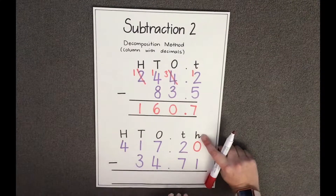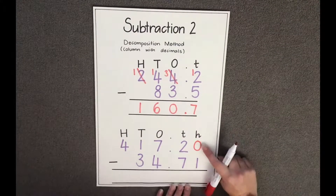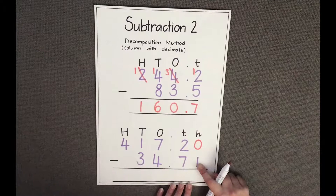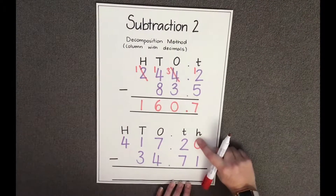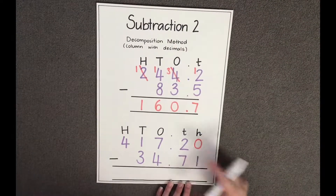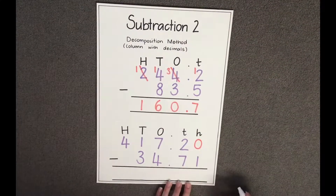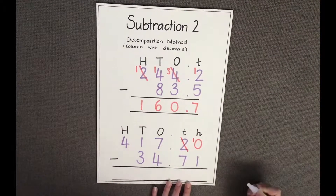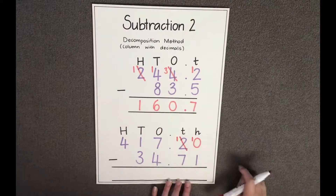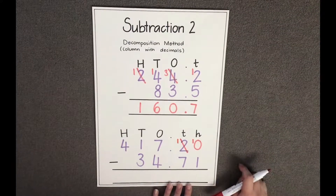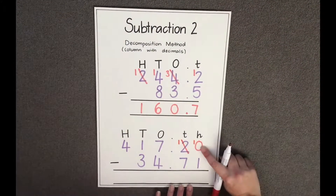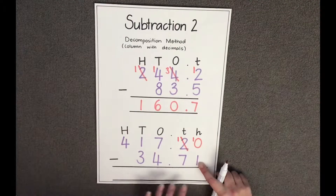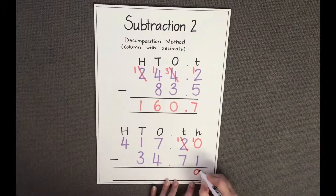I'm going to start my subtraction with my hundredths. Zero hundredths take away one hundredth — because I do not have enough hundredths to take away one, I have to borrow from the column next door. I'm going to borrow one tenth from the tenths column, and that leaves the tenths with one tenth. Now I have ten hundredths take away one hundredth, which leaves me with nine hundredths.